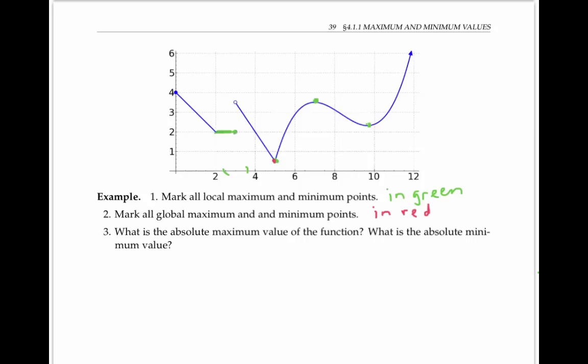So we have all the absolute and local maximum points marked. There is no absolute maximum value, but the absolute minimum value is the y value of the absolute minimum point, which is about 0.5.